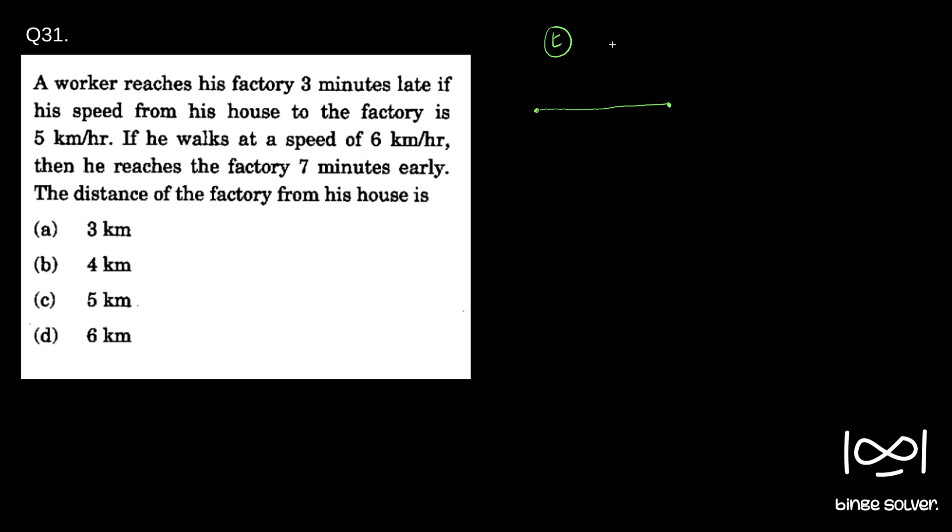It is given in the first case, he walks for t minutes, then he took three more minutes to reach his factory when he walks at a speed of 5 kilometers per hour. In the next example, it is said he walks for t minus seven minutes at 6 kilometers per hour, then he reaches the factory.